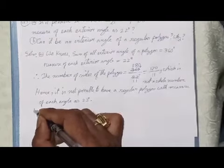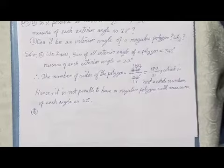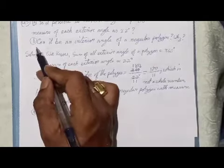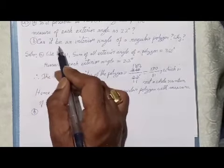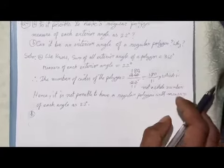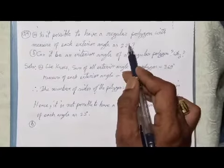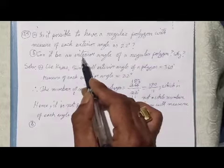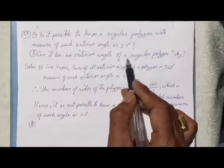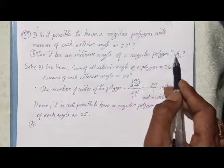Now Question 5b: Can 22 degrees be an interior angle of a regular polygon, and why?